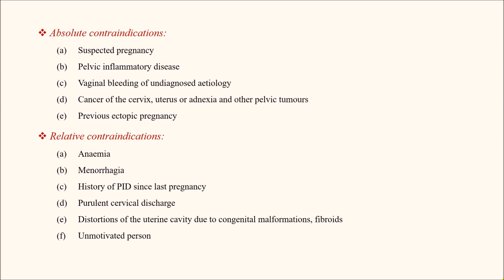Contraindications of IUD insertion include absolute contraindications — conditions where the IUD must not be inserted — such as suspected pregnancy, pelvic inflammatory disease (PID), vaginal bleeding of undiagnosed etiology, cancer of the cervix, uterus, adnexae, other pelvic tumors, and history of previous ectopic pregnancy. Relative contraindications include anemia, menorrhagia, history of PID since last pregnancy, purulent cervical discharge, distortions of the uterine cavity due to congenital malformations, presence of fibroids, and an unmotivated person.